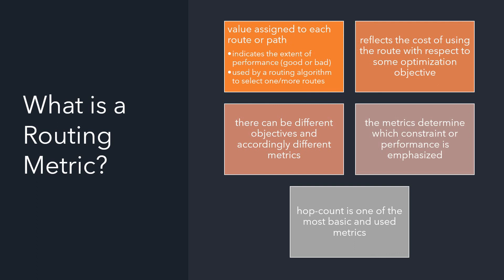This value is used by the routing algorithm to determine which route will be selected for the path from source to destination, and it can also be used to select more than one route based on sorted routing metric values. The value reflects the cost of using the route with respect to some optimization objective. The metrics determine which constraint or performance is emphasized — for example, power consumption or time taken for a packet to travel.